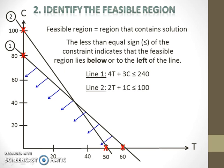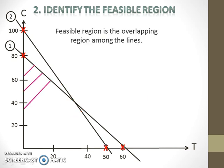For the second constraint, the sign is also less than or equal. This means the region also lies below the second line. The feasible region is the overlapping region among the lines.